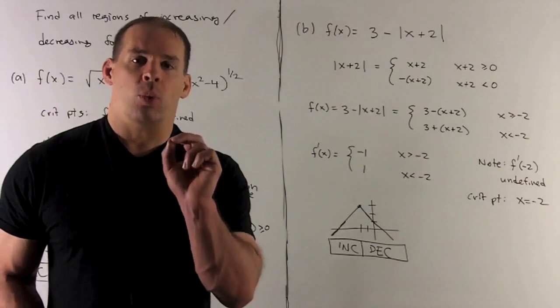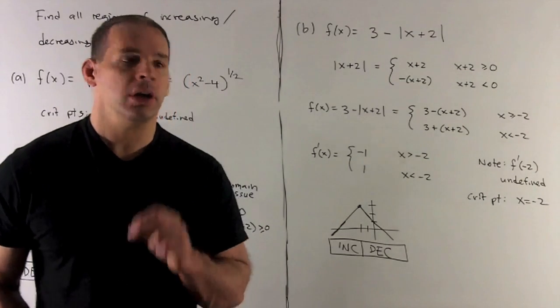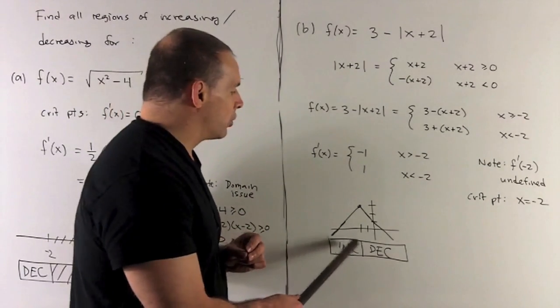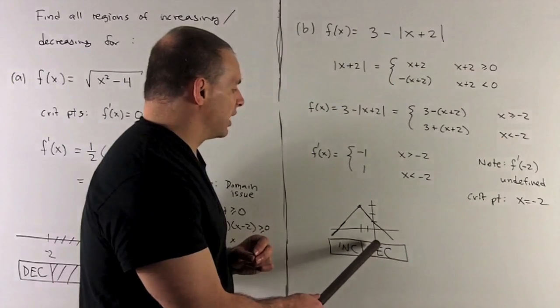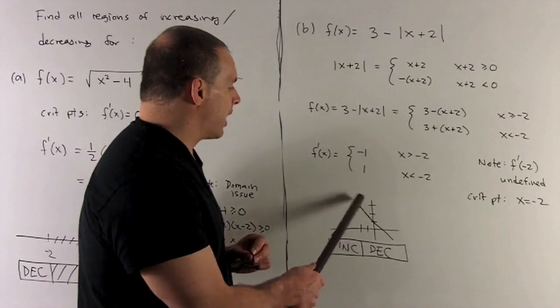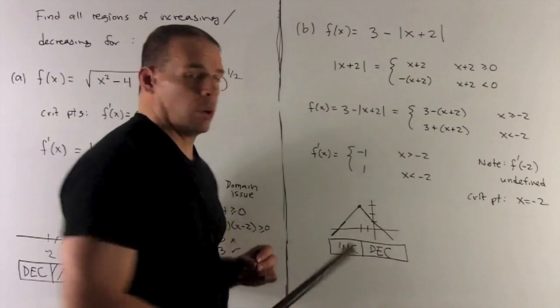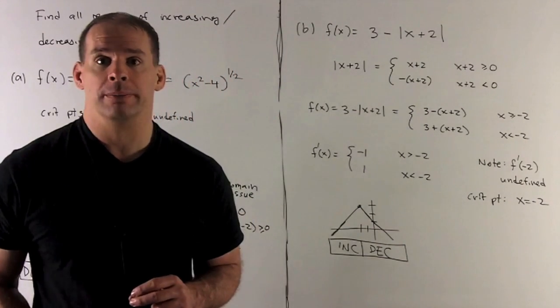Going one step further: since the function goes from increasing to decreasing, we have a local maximum at x = -2.